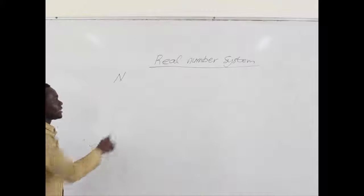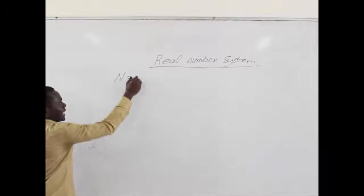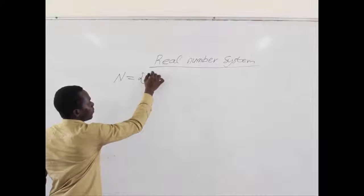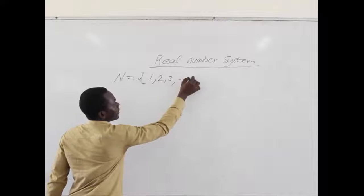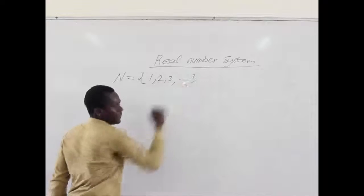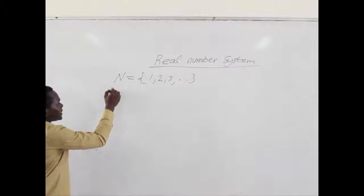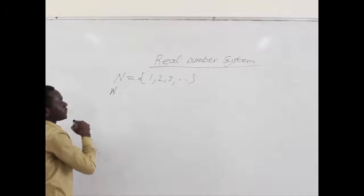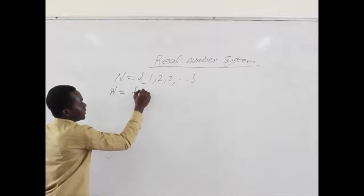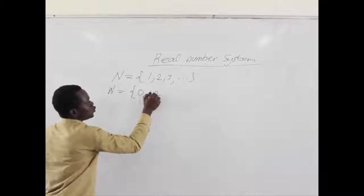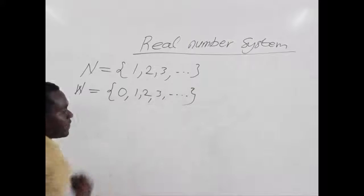As we know, we have natural numbers, which we denote with capital N, and these are a set of numbers that start from 1 to infinity. We also have whole numbers, which we denote with capital W, and they start from 0 to infinity.